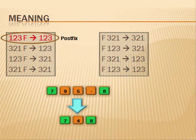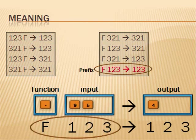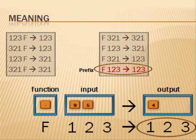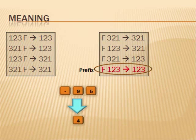When numbers are placed on the outside, they are carried down as shown. For prefix, the function name is placed before the input. The input is ordered from left to right, and the output is also ordered from left to right. For prefix, subtract nine five produces four.